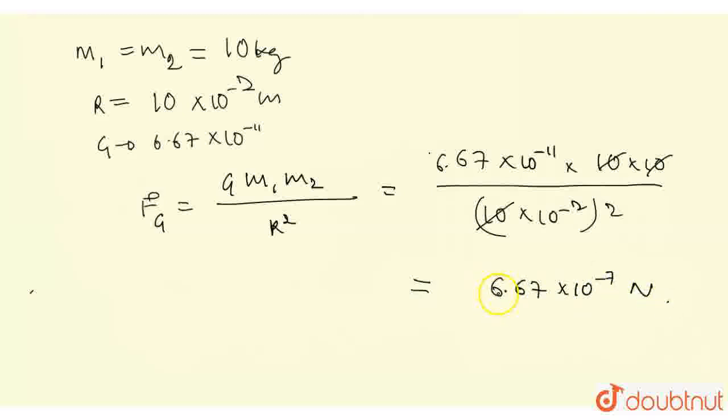So, the gravitational force between them is 6.67 × 10^-7 newton. This is our answer.